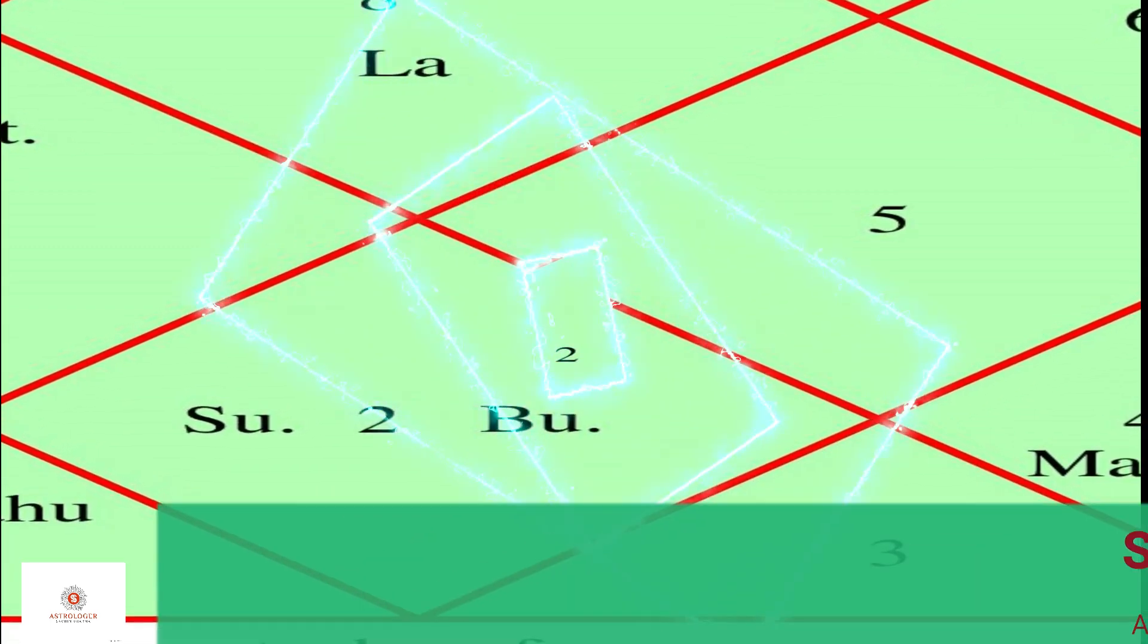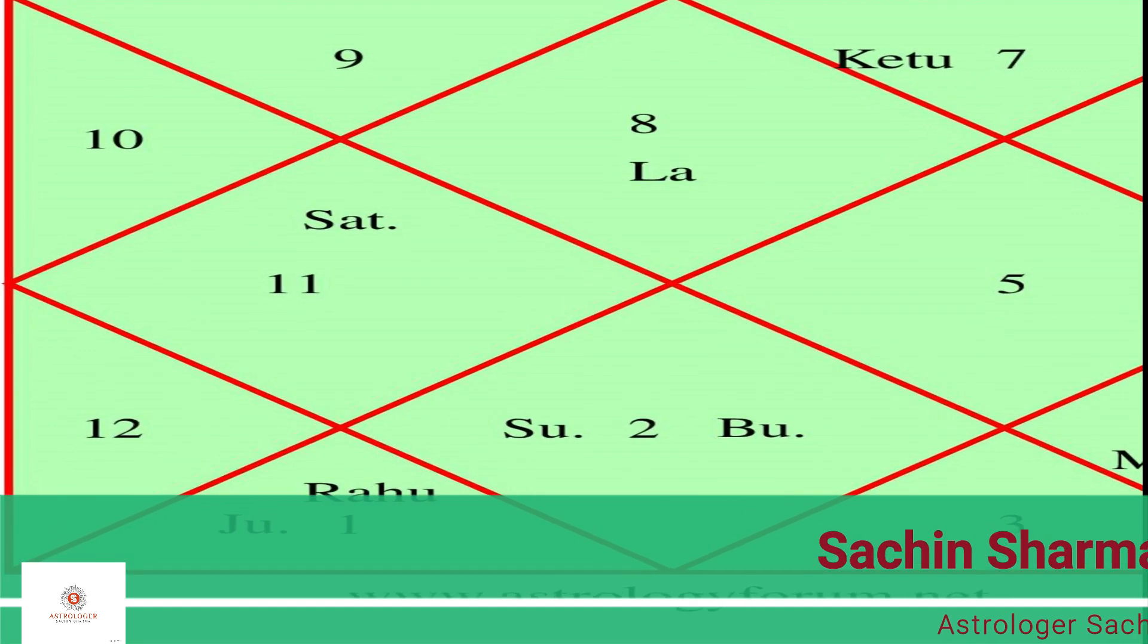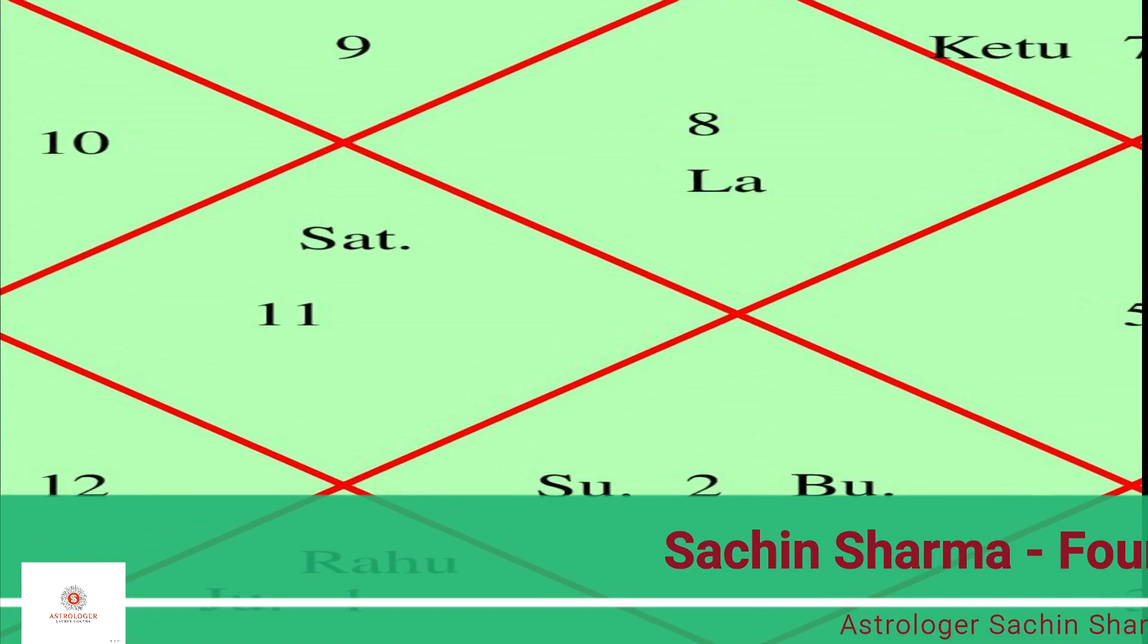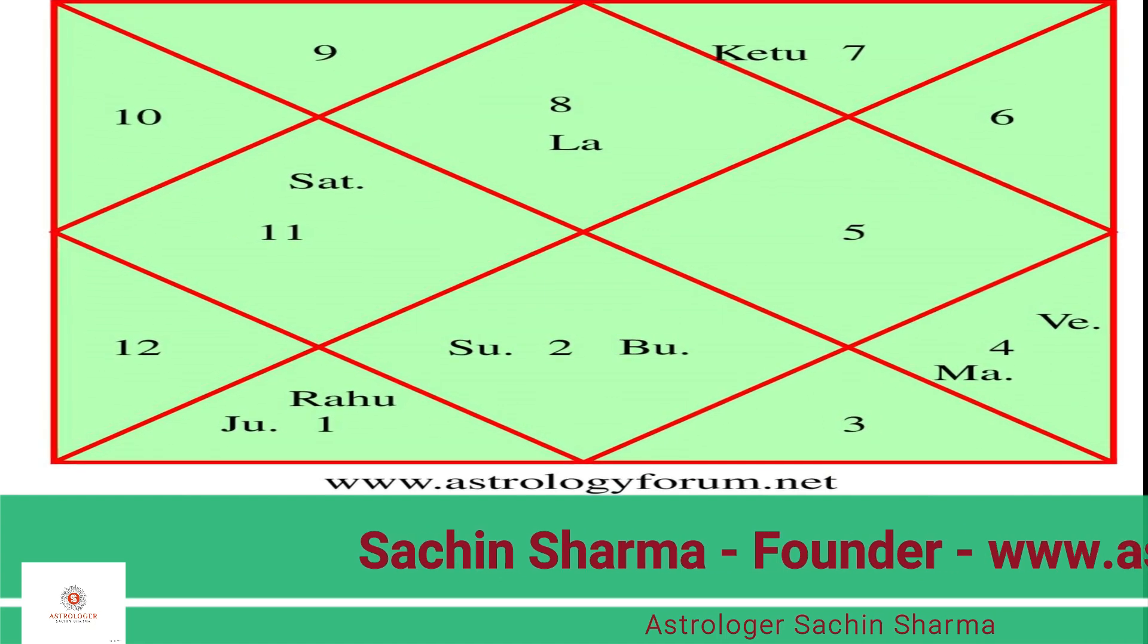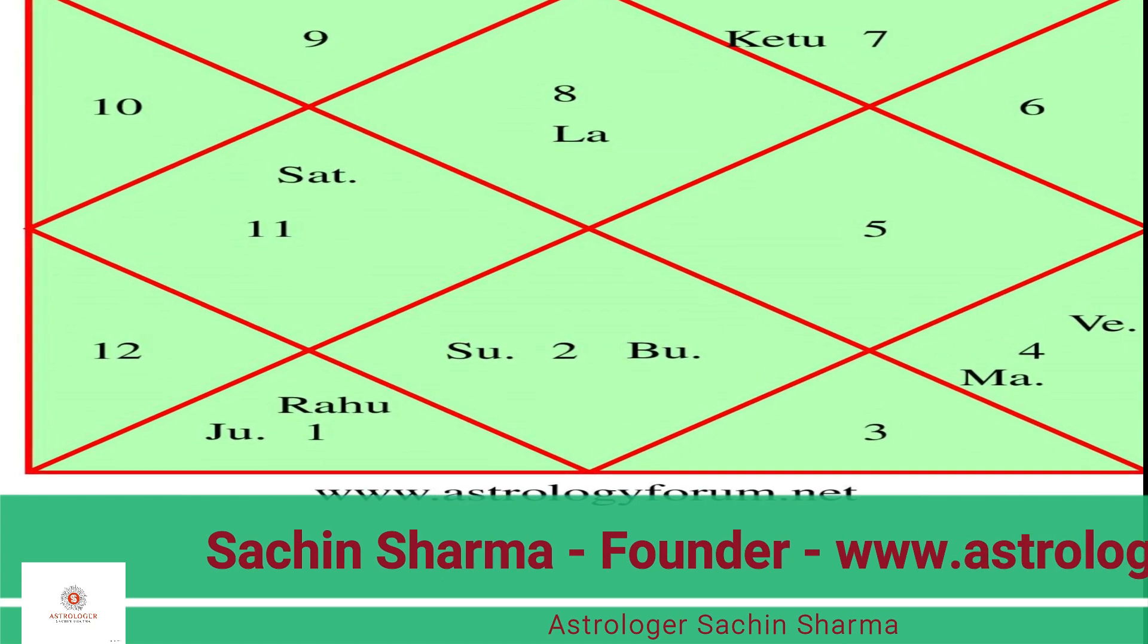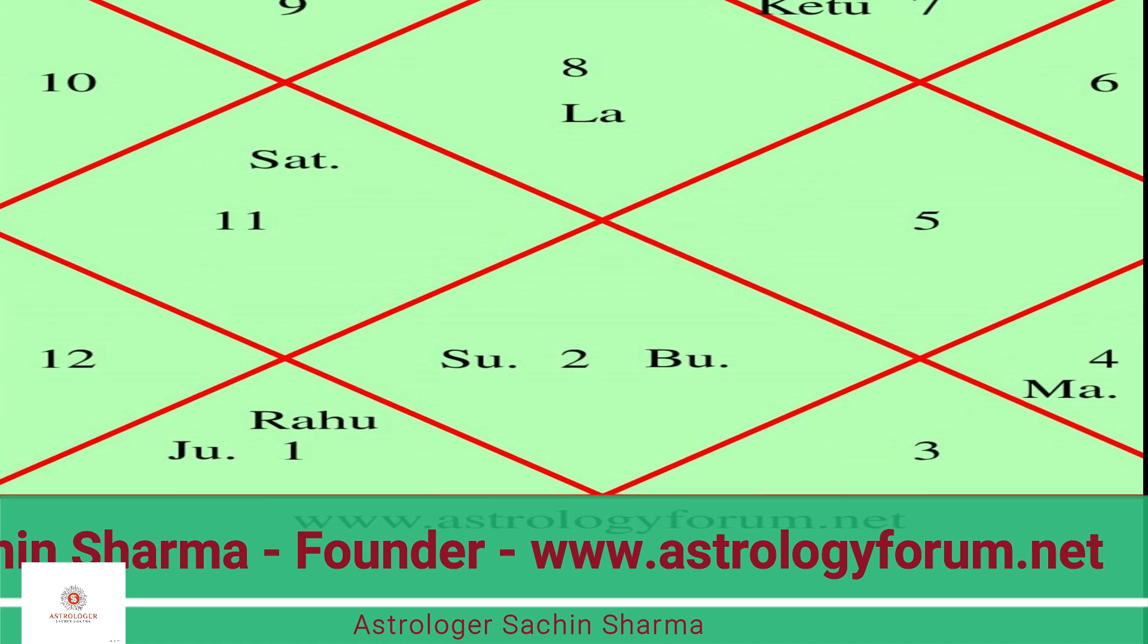During this period Saturn is forming Shash Panch Mahapurush Yoga in your fourth house. Saturn's placement in the fourth house in Aquarius can have a significant and positive impact on one's career. It brings discipline, responsibility, and a strong work ethic to the individual's professional endeavors.